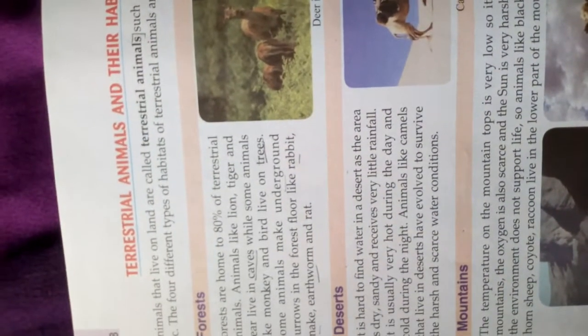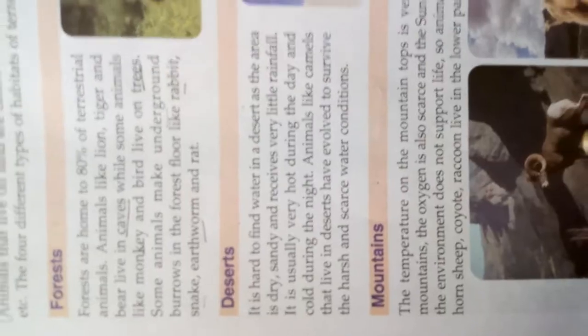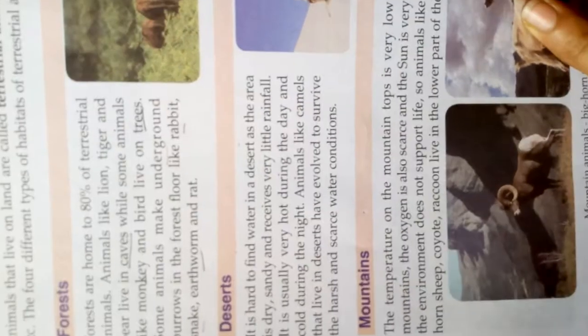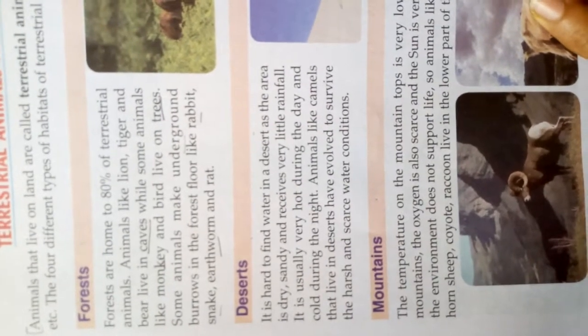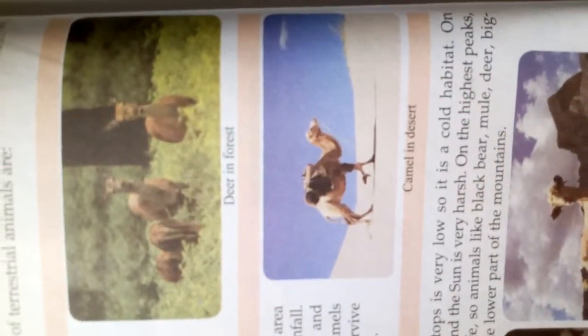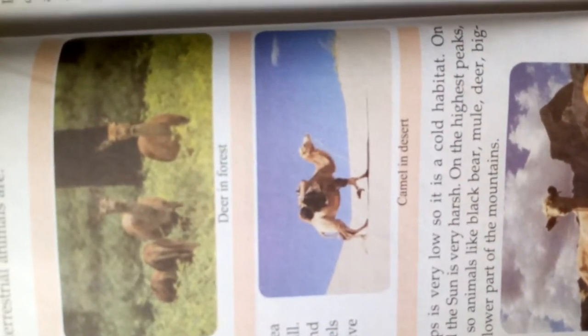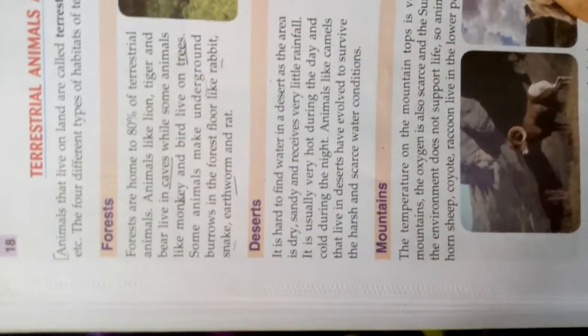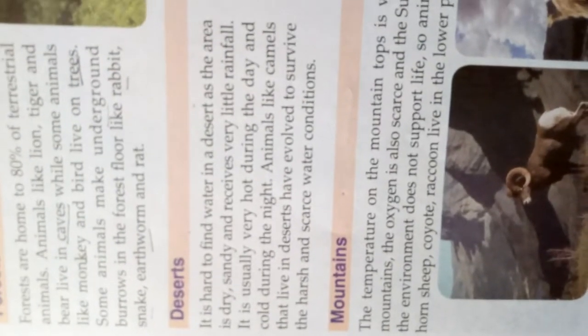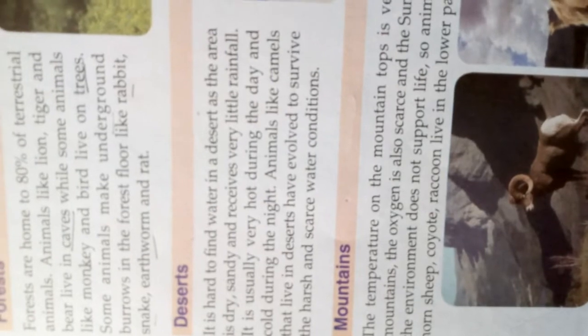The next terrestrial animal habitat is the desert. The camel is known as the ship of the desert. In deserts, it is very hard to survive because there is very little water — the area is very dry and sandy and receives very little rainfall.